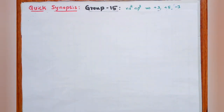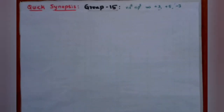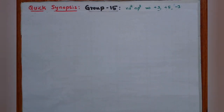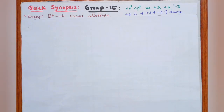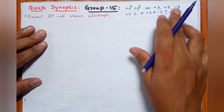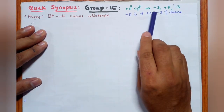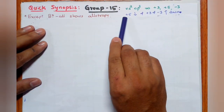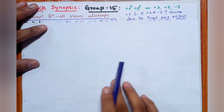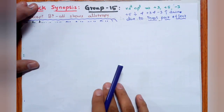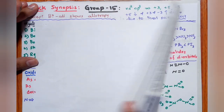In Group 15, the general configuration is ns² np³. The oxidation states are +3, +5, and -3. Except bismuth, all elements show allotropy. The +5 oxidation state decreases down the group while +3 and -3 increase — this is due to the inert pair effect.